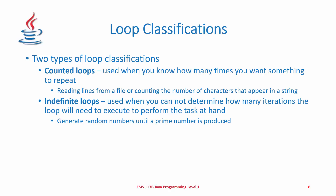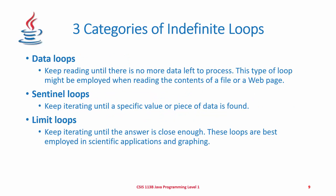Loops fall into two types of classifications. Counted loops are used when we know how many times we want something to repeat — for example, reading lines from a file or counting characters in a string. Indefinite loops are used when we can't determine how many iterations the loop will need to execute — for example, generating random numbers until a prime is produced, or counting characters until a period is located. There are three categories of indefinite loops: data loops (read until no more data), sentinel loops (iterate until a specific value is found), and limit loops (iterate until the answer is close enough), best used in scientific applications.